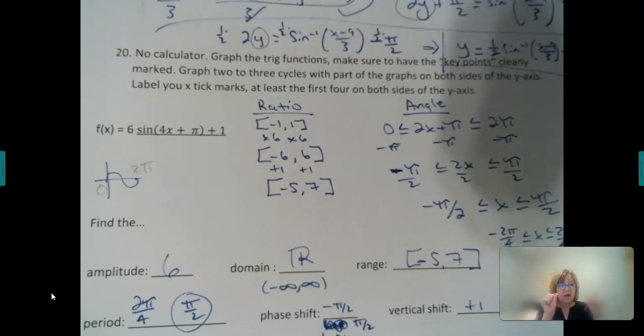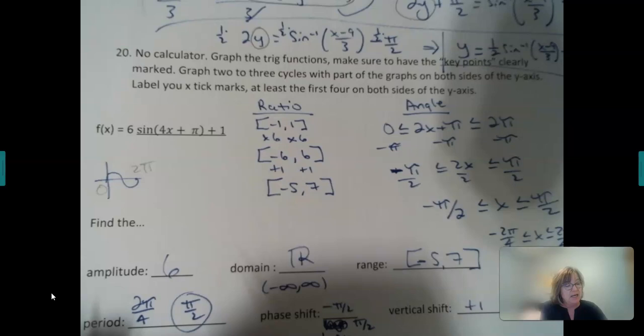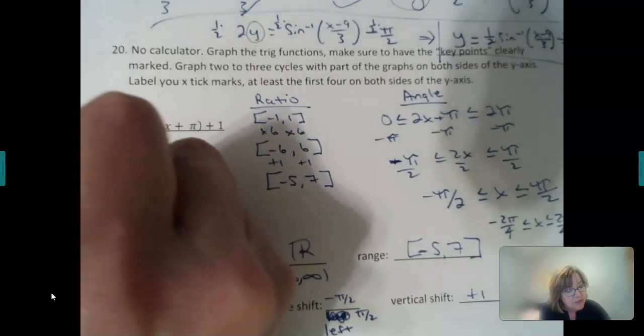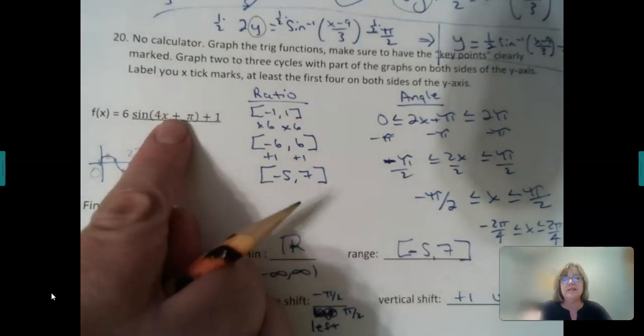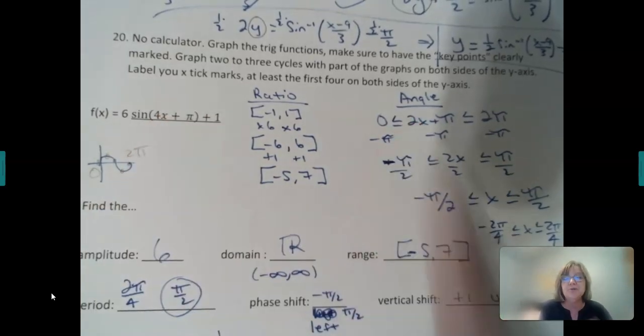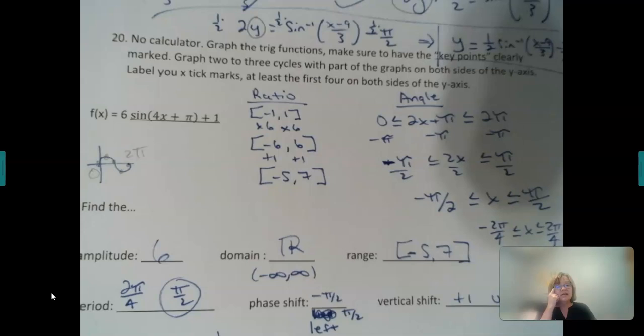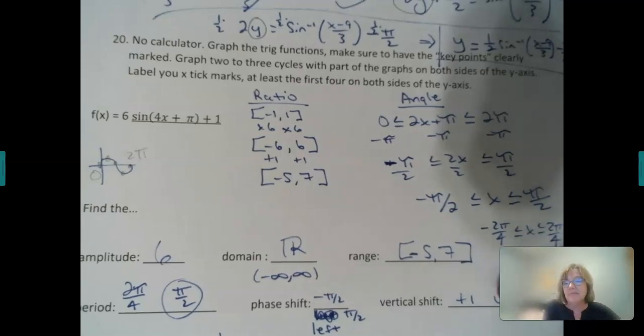The normal period to get one iteration would be mid, high, mid, low, mid, and that happens between 0 and 2 pi if there's no shift. But see, there's a shift.